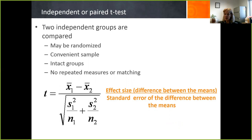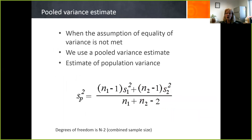Two independent groups are compared — they may be randomized, a convenient sample, or intact groups — and there are no repeated measures. Conceptually, the t-test is equal to the ratio of the effect size — the difference between the means — over the standard error of the difference between the means. When the assumption of equality of variance is not met, a pooled variance estimate is used as an estimate of the population variance, with degrees of freedom being n minus two for the combined sample size.